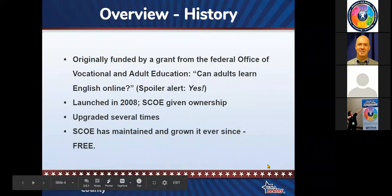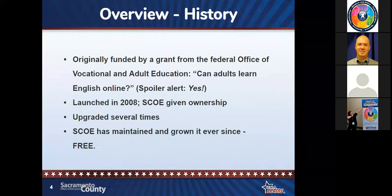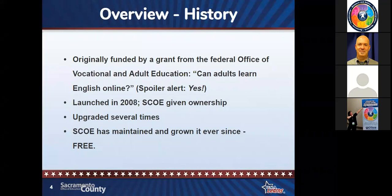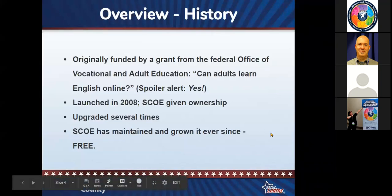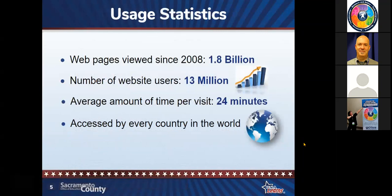Let me give you a little bit of background about USA Learns. It was originally funded by a grant that my office got with the Federal Office of Vocational and Adult Education. The purpose of the grant was to figure out if adults could learn online — and spoiler alert, after all these years, I think the answer is yes. USA Learns originally launched in 2008. At the end of the grant, the federal government gave the Sacramento County Office of Education ownership of the site. Since the site launched, we've had 1.8 billion — with a B — web pages viewed, which is really quite a lot.